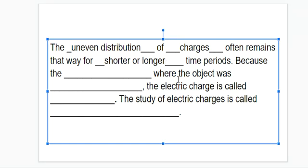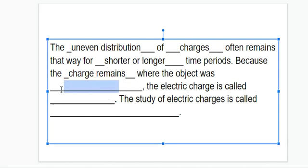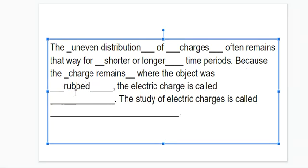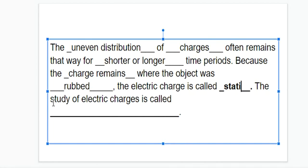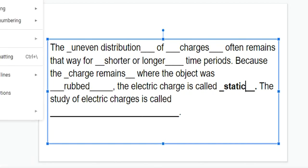Because the charge remains where the object was rubbed, the charge is called static, which is fancy talk for not moving. Please notice this is a bold term. I'll take one second to make sure to be very obvious on that.